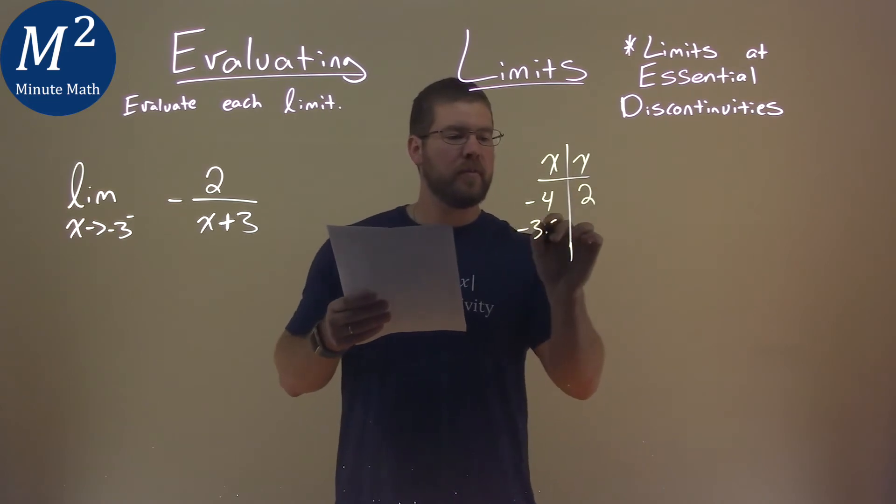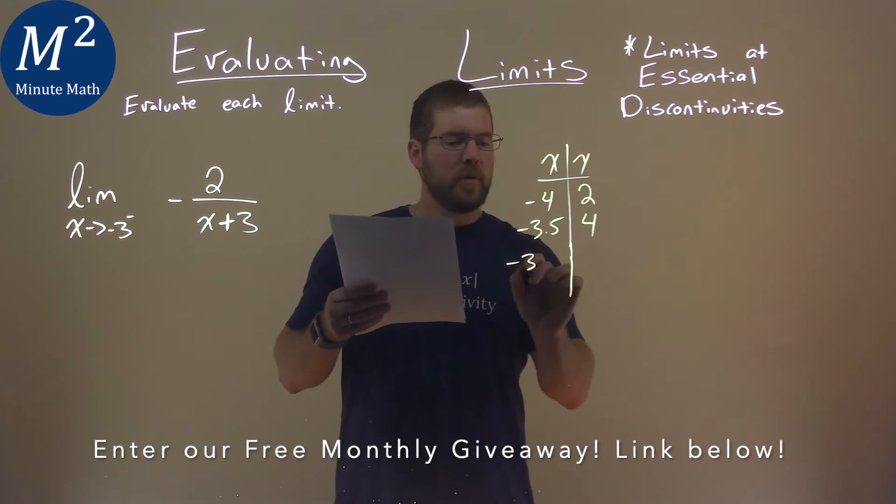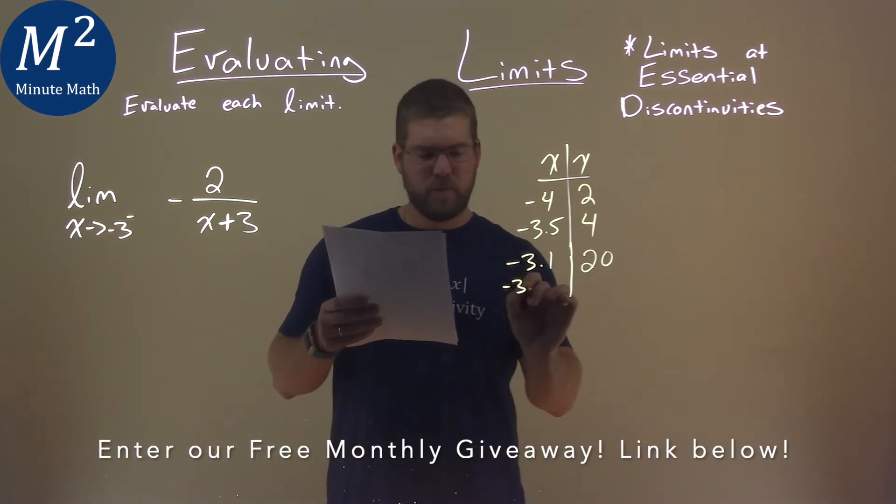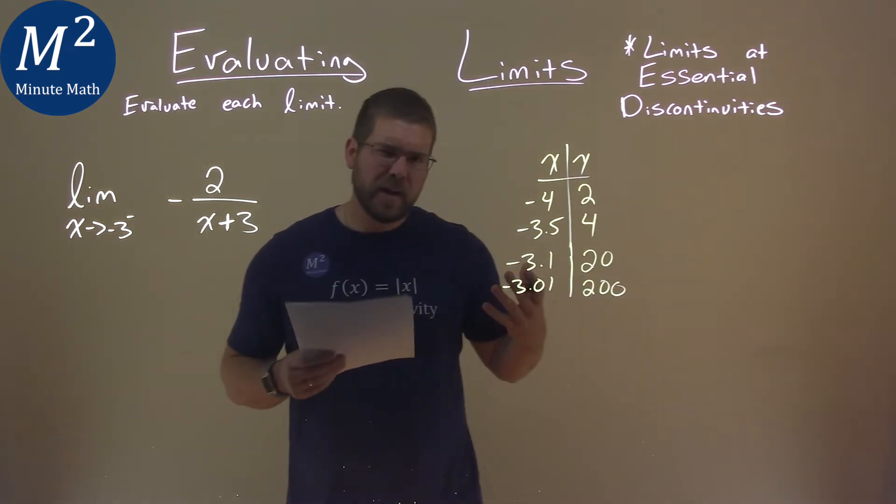Negative 3.5 in for x, I got a positive 4. Negative 3.1 in for x, I got a positive 20. Negative 3.01 in for x, and we get 200. And it looks like it's growing to infinity.